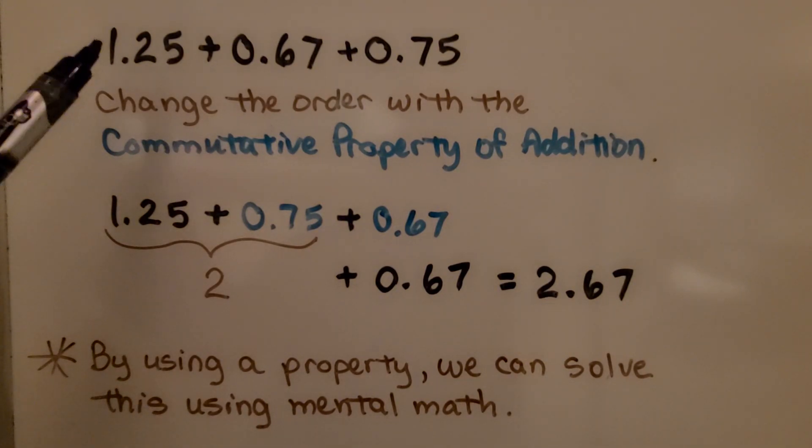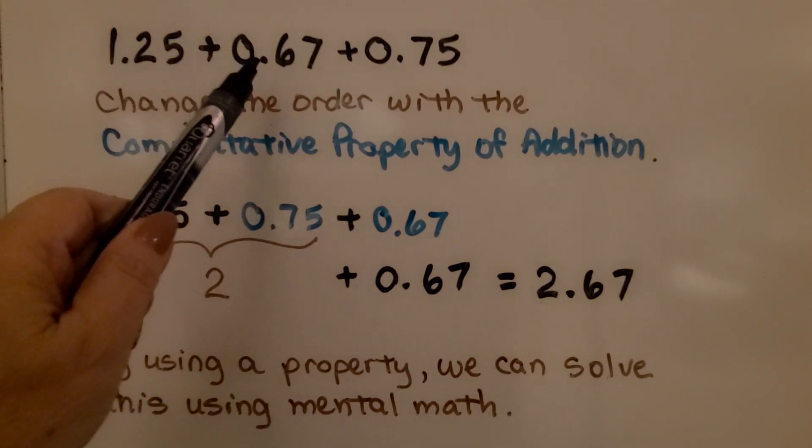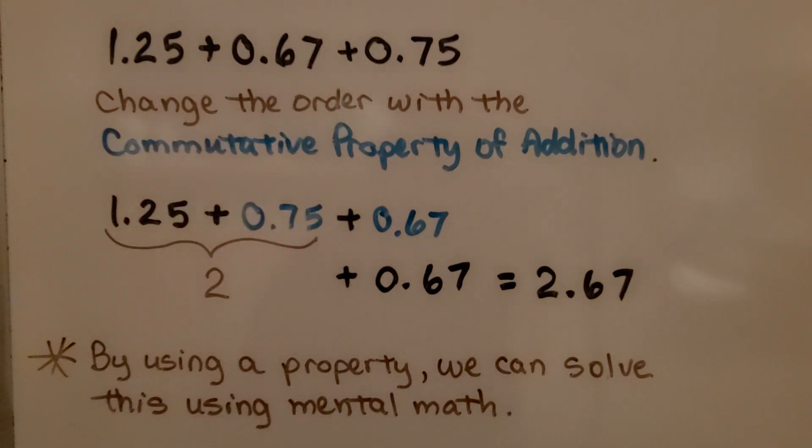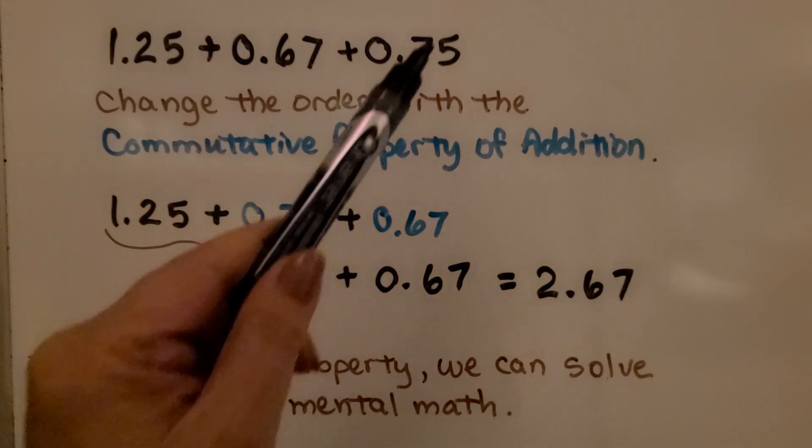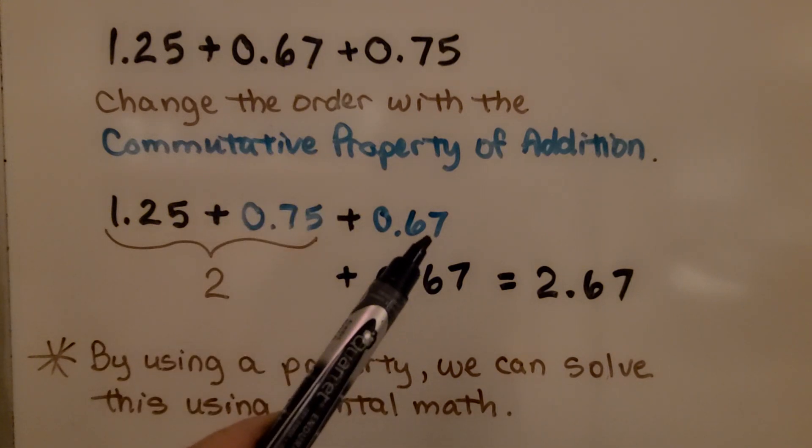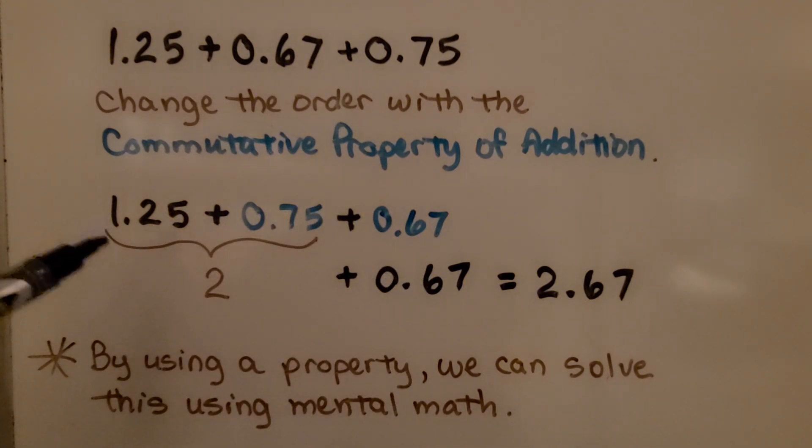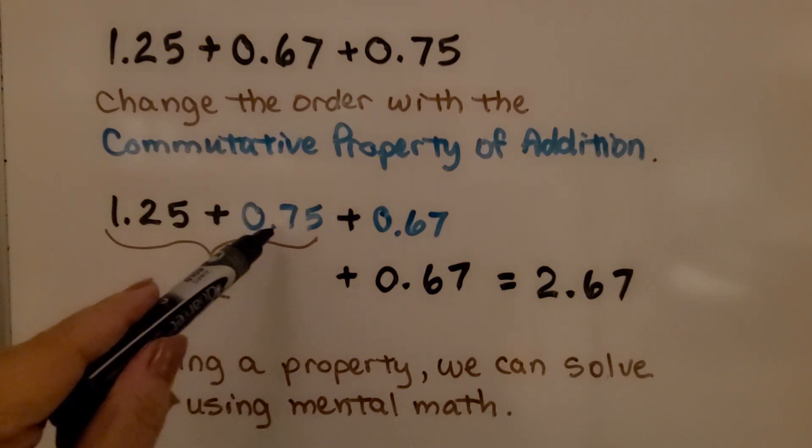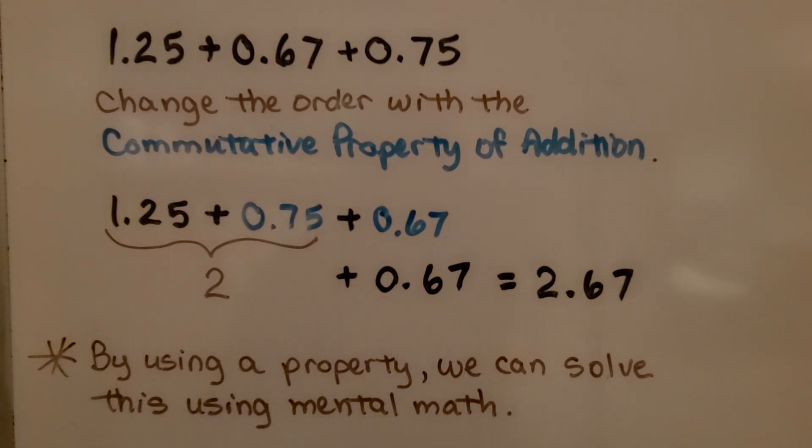Here we have 1.25 plus 0.67 plus 0.75. If we change the order with the commutative property of addition and we move this 0.75 over here and the 0.67 back over here, we can look at this and if we think about money, this would be like $1.25 plus 75 cents, well that would be $2, wouldn't it?